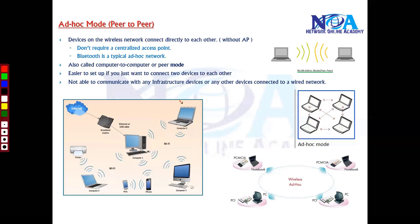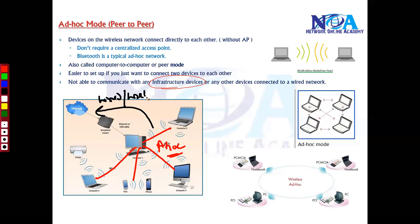One more limitation: in ad-hoc mode you may not be able to communicate with any infrastructure devices or other wireless networks. For example, if you want your ad-hoc devices to communicate with a wider network, that is not possible by default unless you do some kind of bridging — bridging the two interfaces can allow communication, but by default it is not possible.